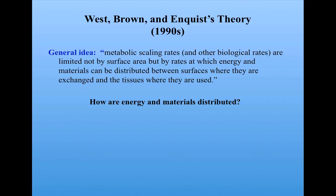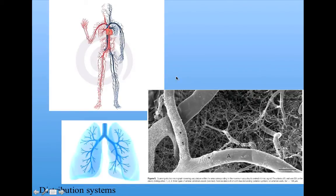So how are energy and materials distributed? Here's a picture of the circulatory system in humans, a picture of the lungs with these so-called bronchi, which have a similar tree-like structure to the circulatory system. Here's an electron micrograph that shows a highly magnified view of the vascular system, and you can really see this kind of fractal tree structure that makes up these distribution networks.